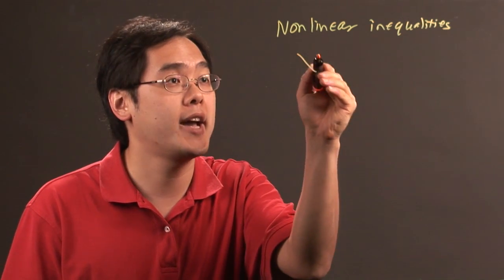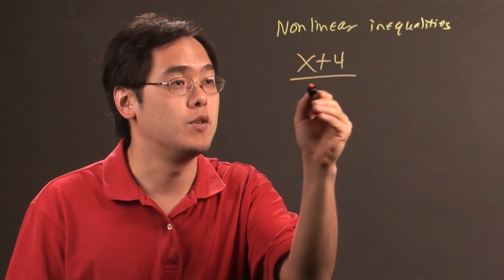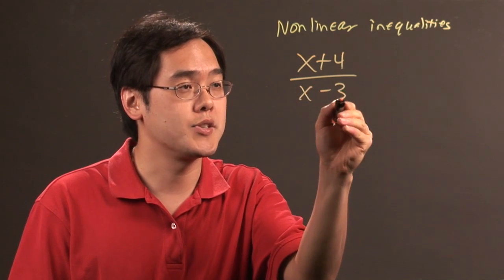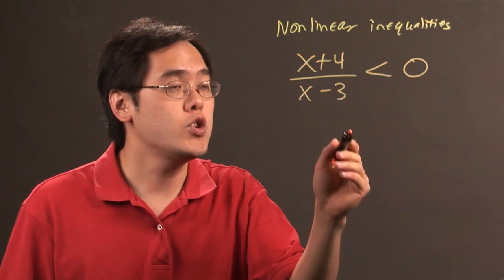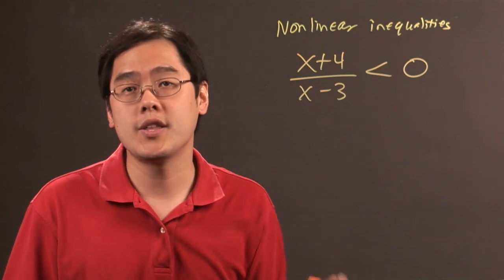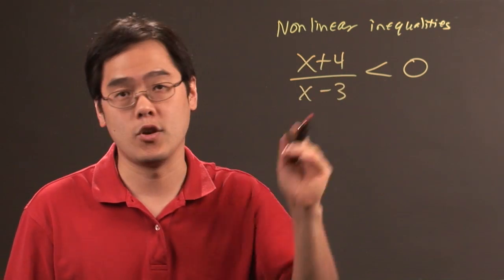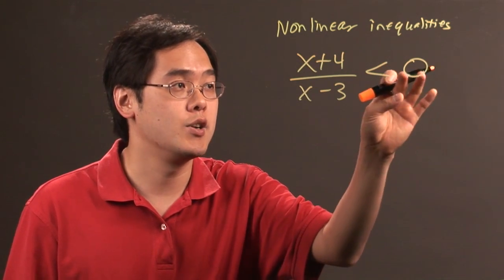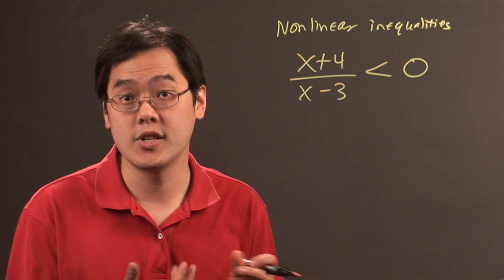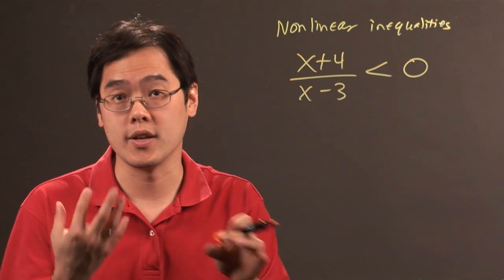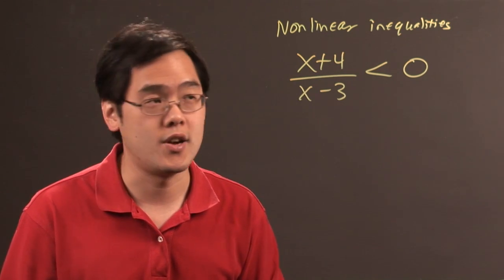For example, if you have (x + 4) / (x - 3) < 0, here's how the critical value method works. You want to be sure that 0 is on the other side. No other number should be on the other side. If there is a different number there, you need to move it over and then combine the terms if necessary.